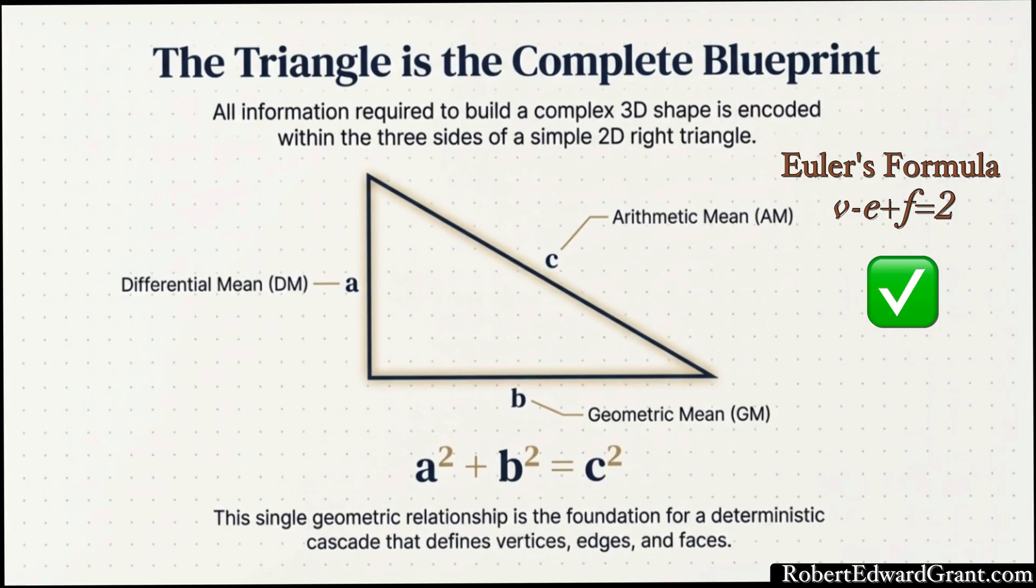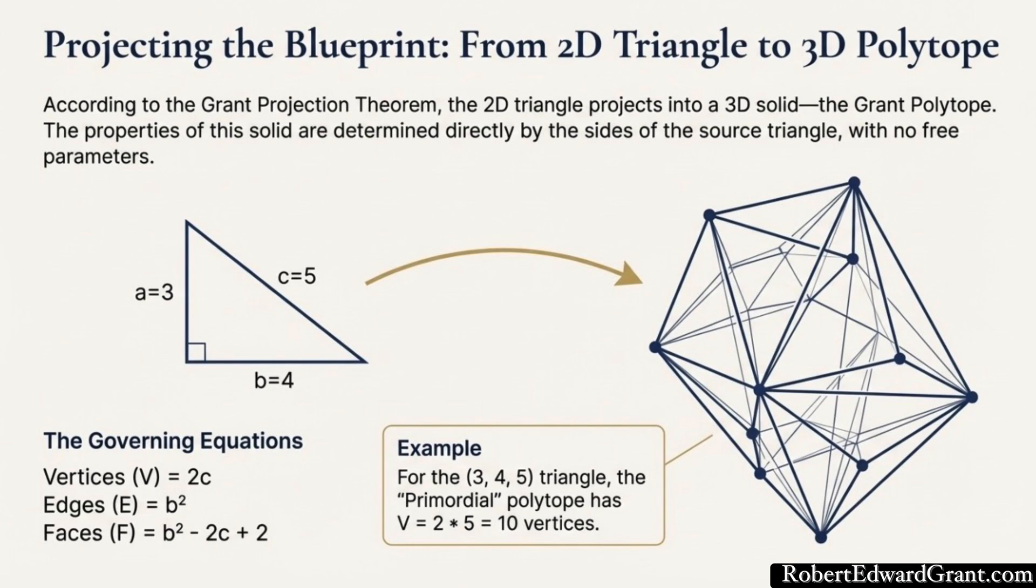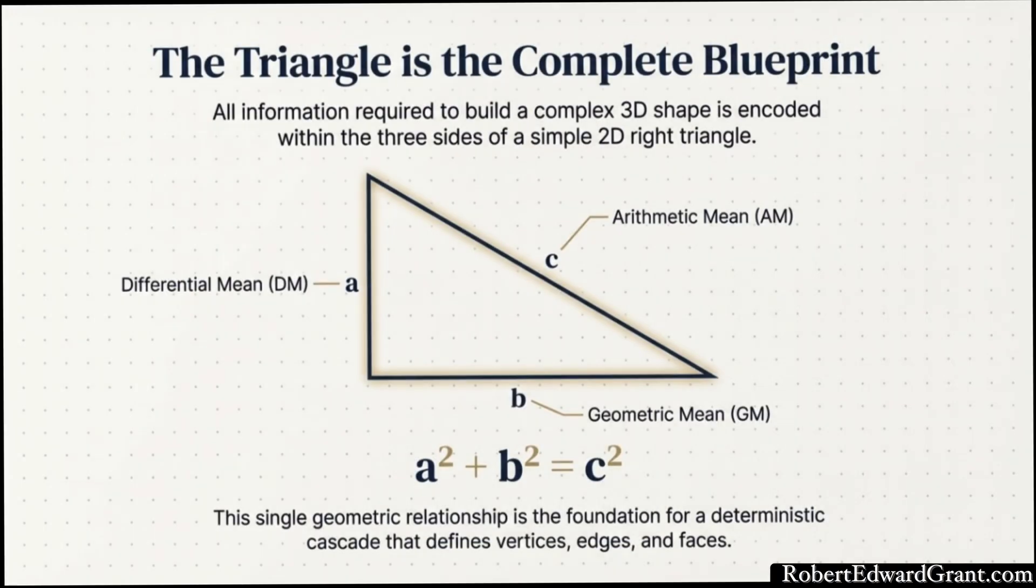Let's get into this generative process. The sources call it a grant polytope, which is essentially just a right triangle, but a special one where its side lengths, A, B, and C, can act as the key to generate a 3D structure, a harmonic solid. The shortest leg A is the differential mean, the middle leg B is the geometric mean, and the hypotenuse C is the arithmetic mean.